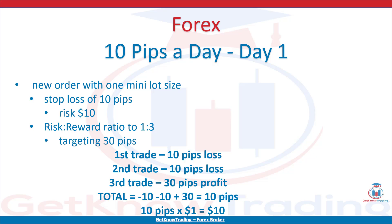On Day 1, when I open a new order with 1 mini lot size with stop loss of 10 pips, I will risk 10% per trade. With risk to reward of 1 against 3, I am targeting 30 pips with each trade. If I open 3 trades per day, I can have 2 bad trades and 1 positive trade to reach the daily target of 10 pips. First trade gives 10 pips loss, second trade gives 10 pips loss, third trade gives 30 pips profit - totally minus 10, minus 10, plus 30 equals 10 pips. With 10 pips of profit, I earned $10. Adding profit to account balance gives $1,010.